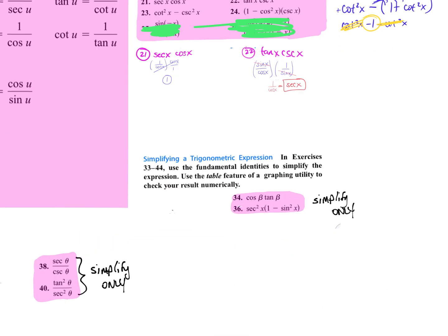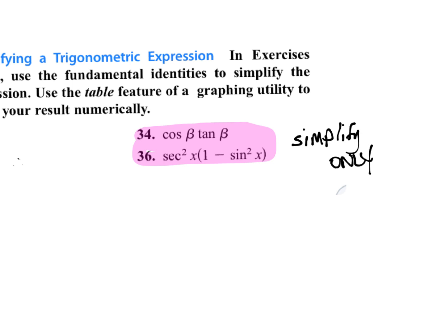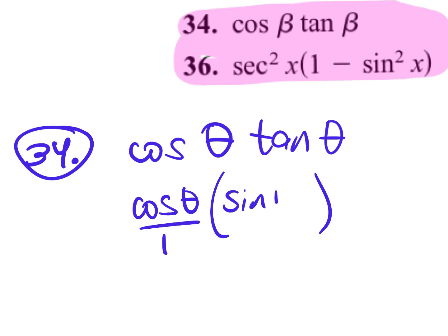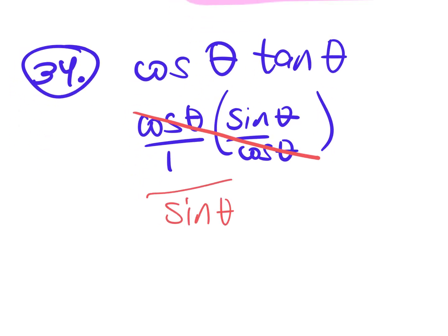Let's look at problem 34 — that's beta, you can change it to whatever you want. This is an easy one because it's multiplication — no addition or subtraction, so just go to sines and cosines. Cosine theta stays. Tangent becomes sine over cosine. Since we're multiplying, the cosines cancel — you're left with just sine theta.